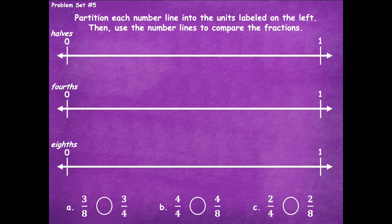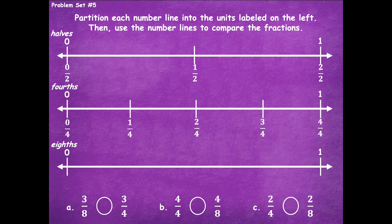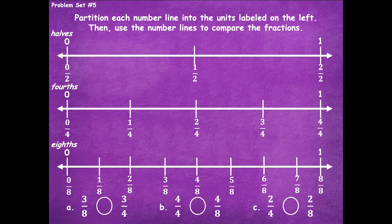For halves, the mark goes right in the middle: zero halves, one half, two halves. For fourths, label three lines. You can split it in half and then split each half in half — just like folding paper. That gives you zero fourths, one fourth, two fourths, three fourths, four fourths. For eighths, split in half, split each half in half, then split each fourth in half again. If that's tricky, draw seven lines spaced as equally as you can.